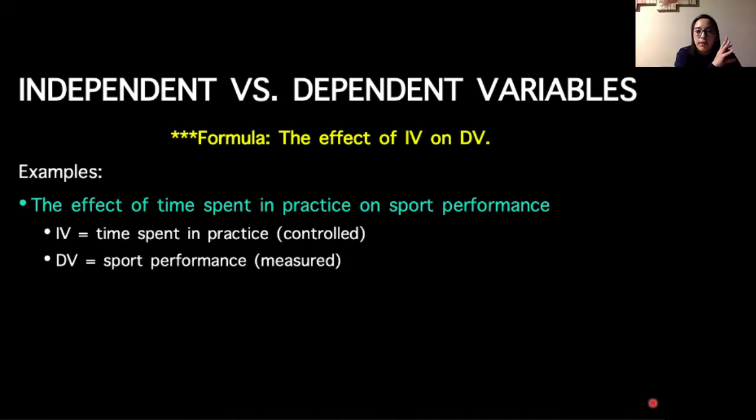Does the time they spend in practice positively or negatively correlate with how many points they score in a game? That's one example where you have two ratio type variables, but you have specifically one independent variable that you are controlling—time spent in practice—and then you're looking at the measurement of sport performance in terms of how many points they make.